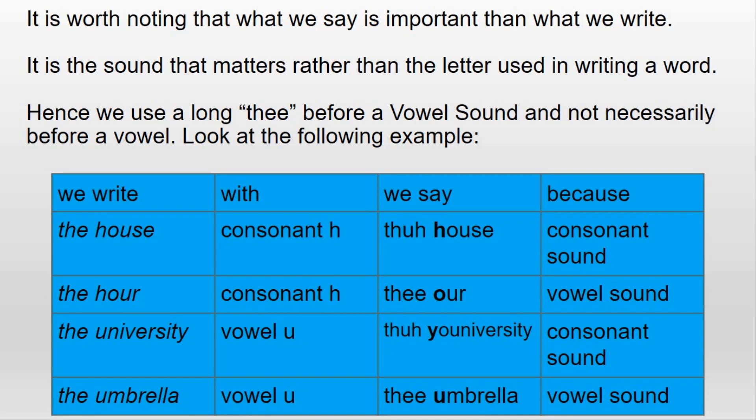Look at the following example. We write 'the house' with consonant H, and we say 'thuh house' because of the consonant sound H. We write 'the hour' with consonant H, but we say 'thee hour' because H is silent and because of the vowel sound O.